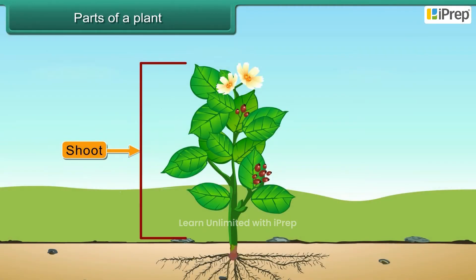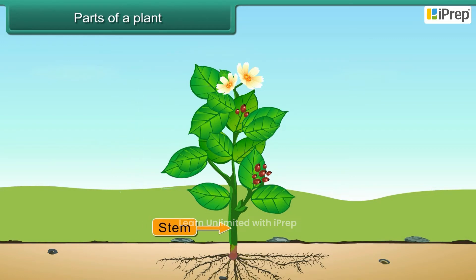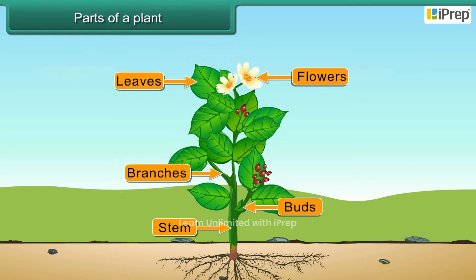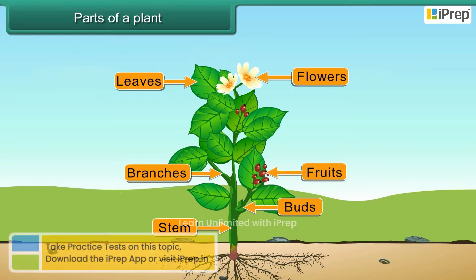The part of the plant that grows above the soil is called the shoot. It contains the stem, branches, leaves, buds, flowers, and fruits.